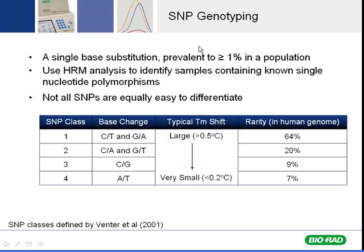If we talk about SNP genotyping — just one of the applications — we're talking about a single-base substitution prevalent in greater than or equal to 1% in a population. You can use HRM to identify samples containing known single nucleotide polymorphisms. Not all SNPs are equally easy to differentiate, and SNPs have been classified into four different classes — from the most prevalent, the CT to GA variants, to the least prevalent, the AT variants.